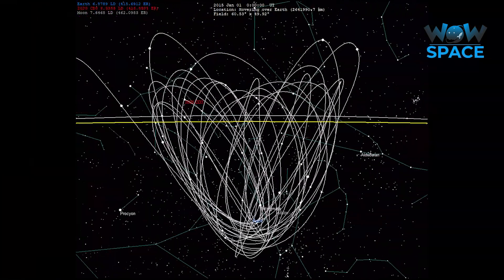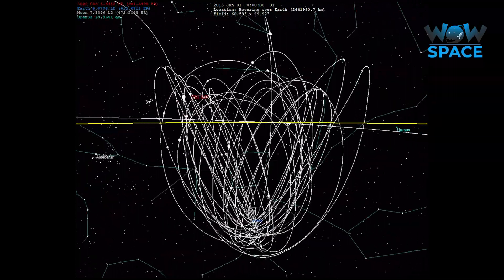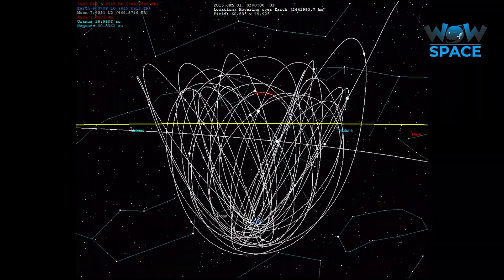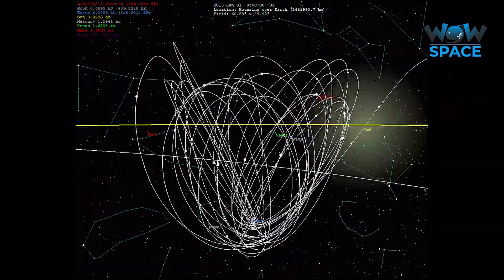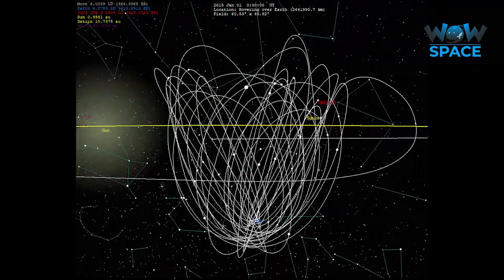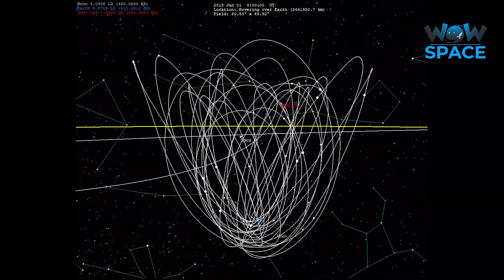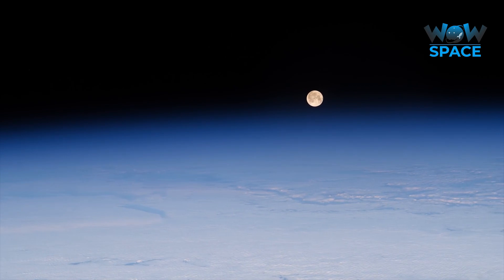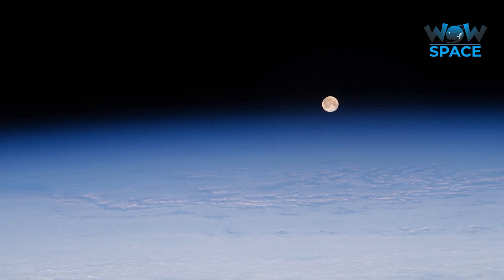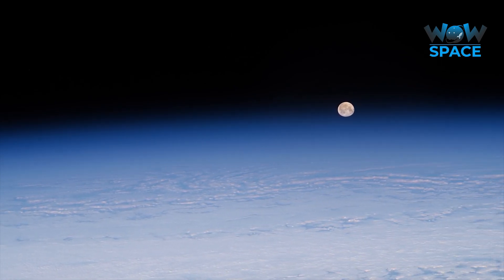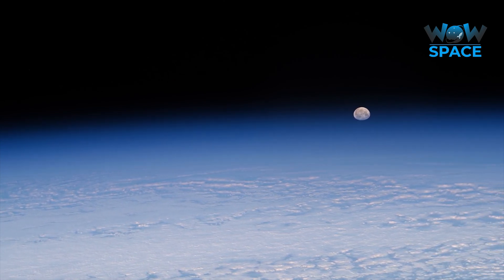In order for Earth to permanently capture an object, it would have to happen in just the right way, likely needing some helpful gravitational tugs from our Moon along the way to tame its orbit. And as far as we know, that hasn't happened yet, meaning anything that does come too close only sticks around for a few orbits before it leaves again.